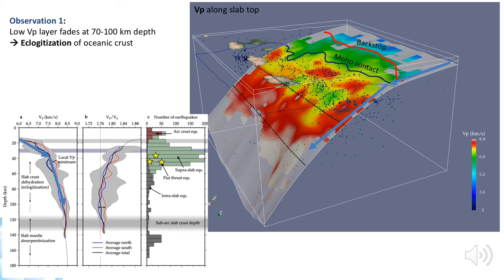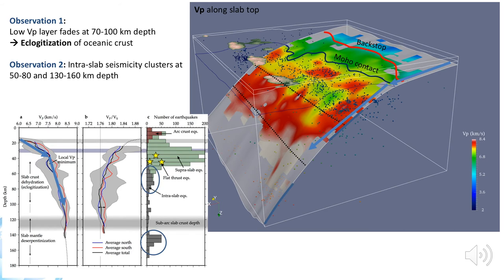The second interesting observation regards the distribution of intraslab earthquakes. I am showing here the distribution of earthquakes with depth. I have separated crustal earthquakes beneath the arc from supraslab earthquakes and intraslab earthquakes. We notice that the intraslab earthquakes are particularly clustered at two depth ranges: at 50 to 80 km depth and at 130 to 160 km depth. Just above the shallower of these two clusters, at 50 km depth, we find a local Vp minimum on the slab top that is elongated and laterally continuous.